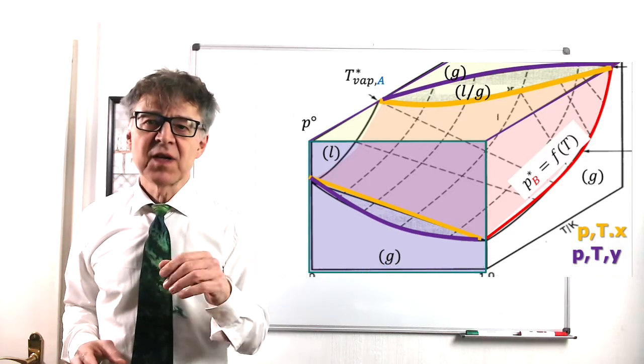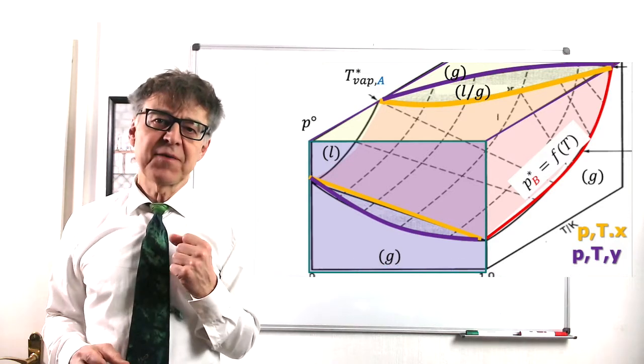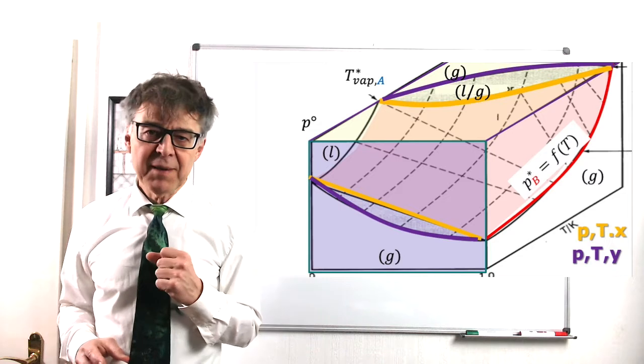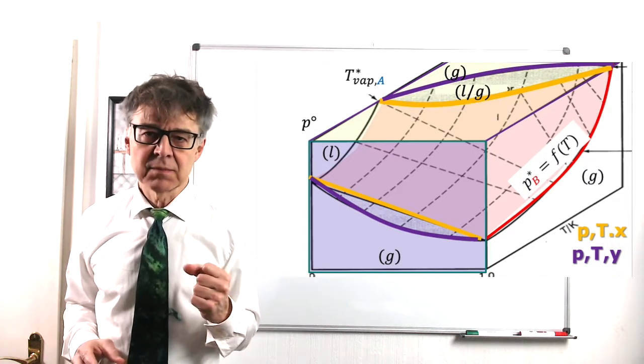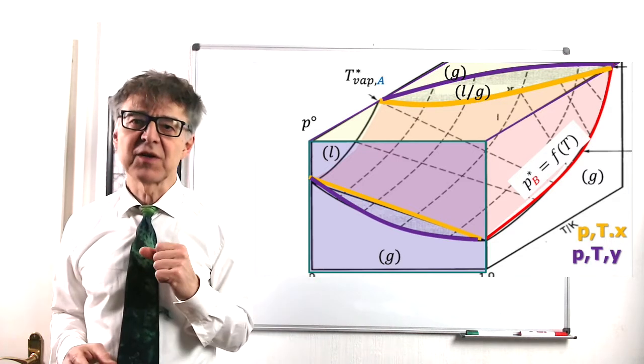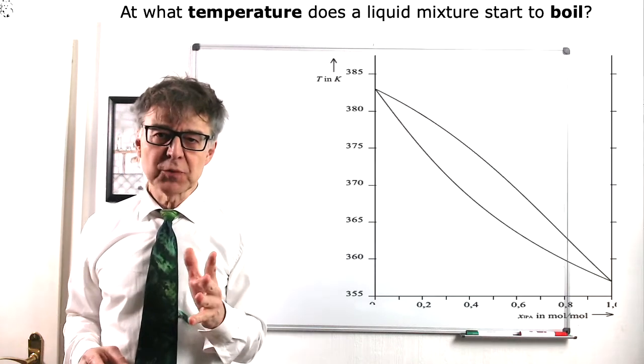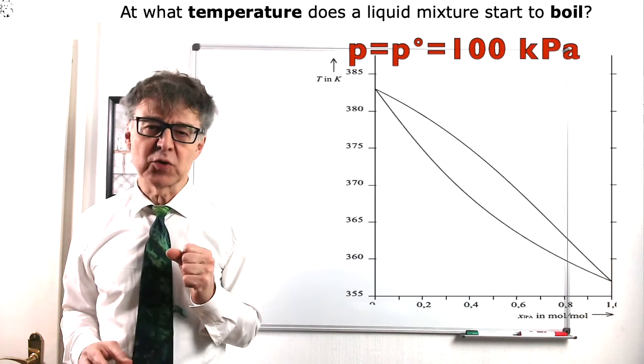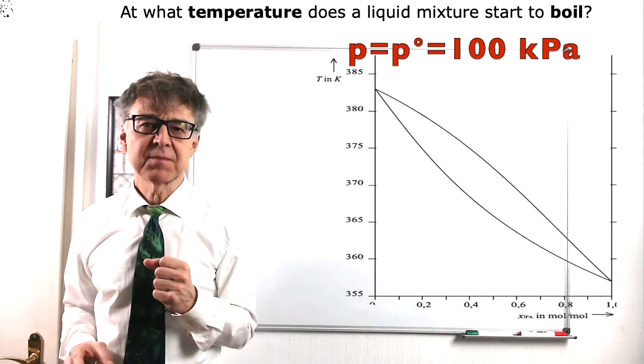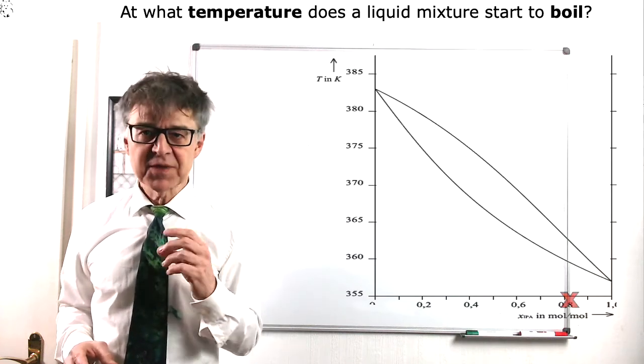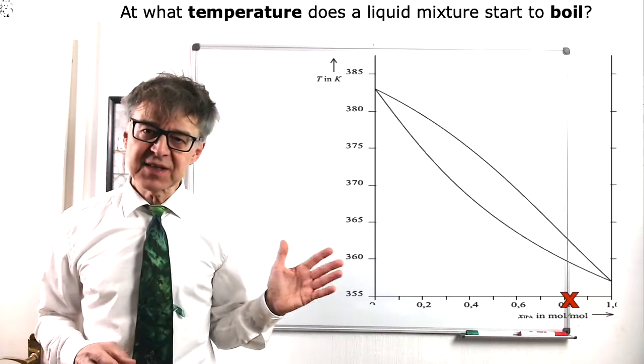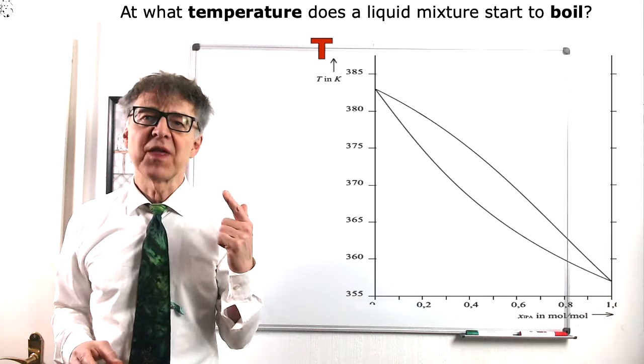In the following, we want to discuss the 2D XT phase diagram of the IBA-IPA system. That is the projection you find on top of this 3D diagram. We choose the pressure to be constant at a standard value, 100 kPa.